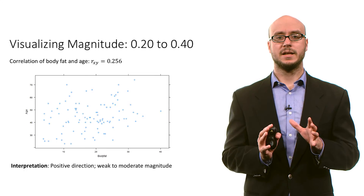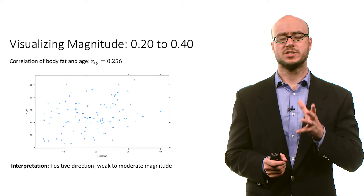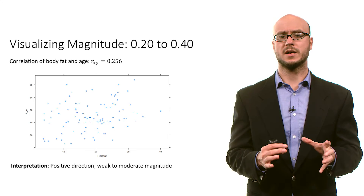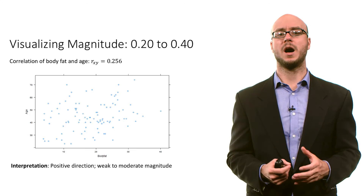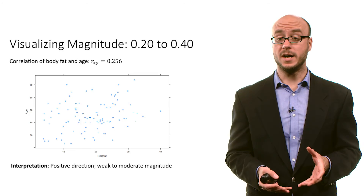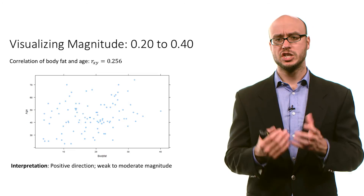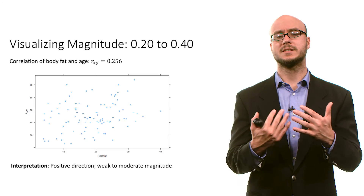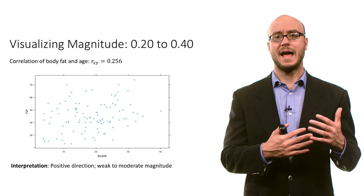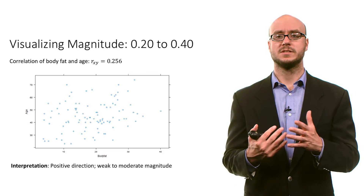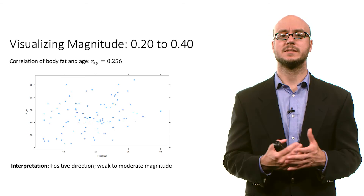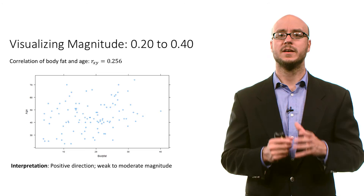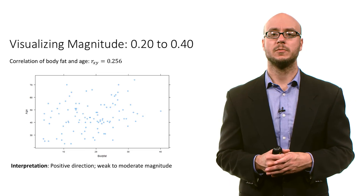If we calculate the correlation between body fat percentage and age, we get a value of 0.256. Using our guidelines, that's a weak to moderate magnitude in a positive direction. You can see in the scatter plot there's some vague semblance — some pattern in the data — where as body fat percentage increases, there tends to be a slight increase in age. They do move together in a very slight, weak way.